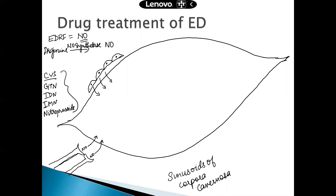Primarily nitric oxide is released from the endothelium surrounding the smooth muscle tissue, and then it is also released from the nerve terminals present in the adventitia of the corpora cavernosa of the penile tissue.